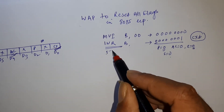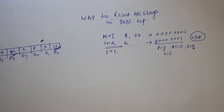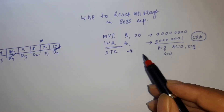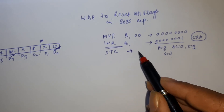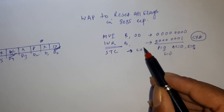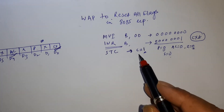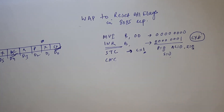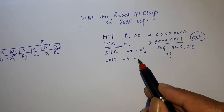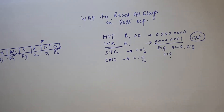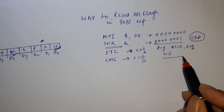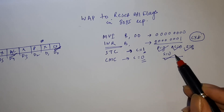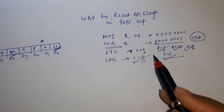What we have to do is execute STC. After this, the value of the carry flag will be set to 1. Then just do CMC — complement carry. After this, the value of the carry flag will be 0. So parity flag is 0, auxiliary carry is 0, zero flag is 0, sign flag is 0, and after CMC, carry flag is also 0.